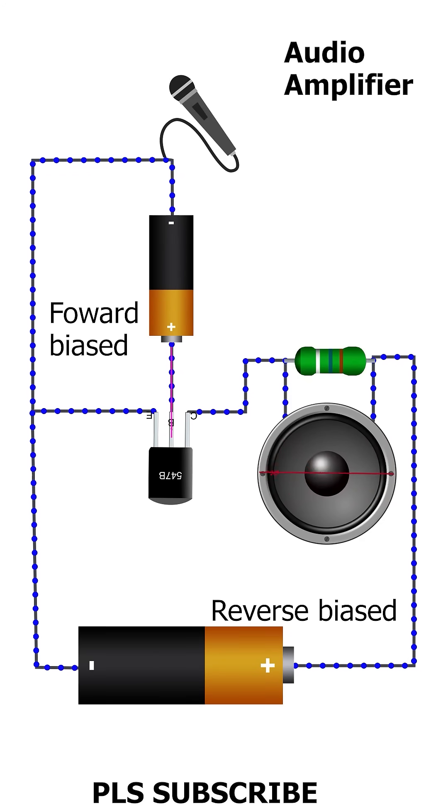The varying collector current, modulated by the input signal, results in a varying voltage drop across this load resistor. This voltage is the amplified output signal.